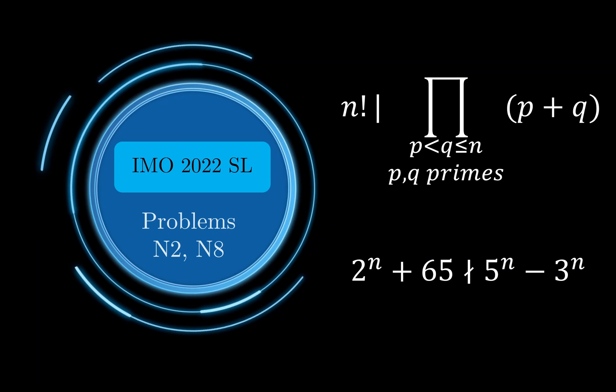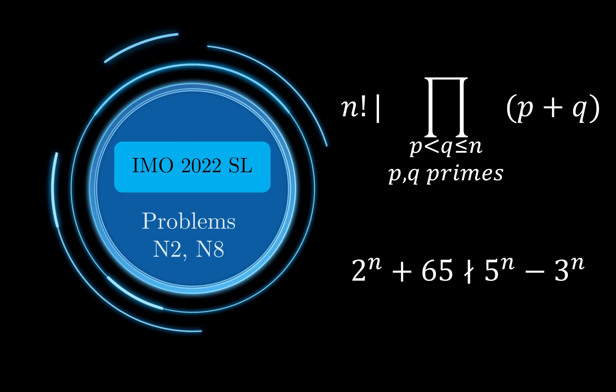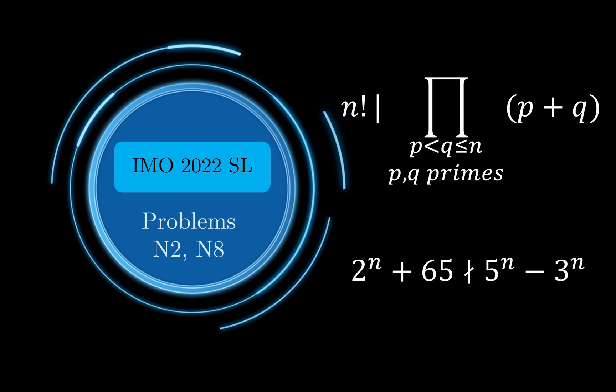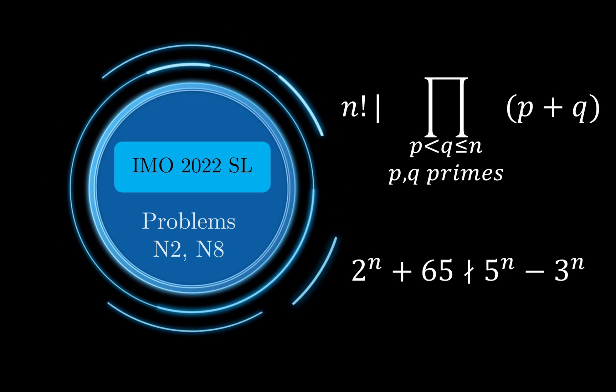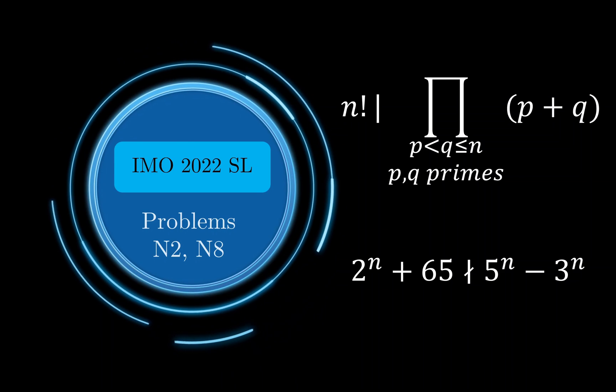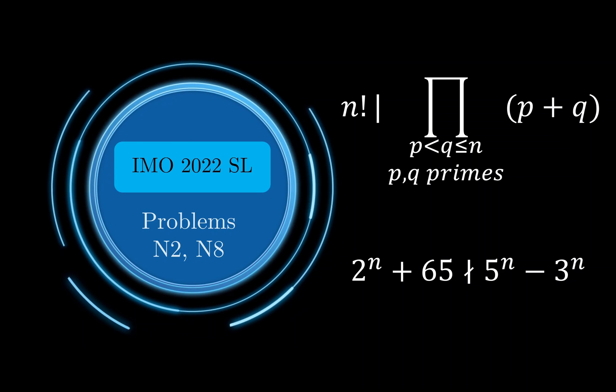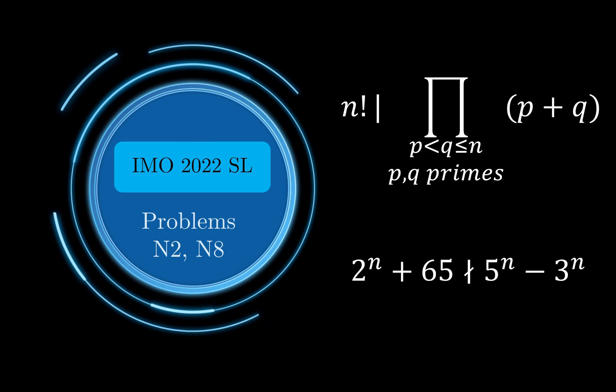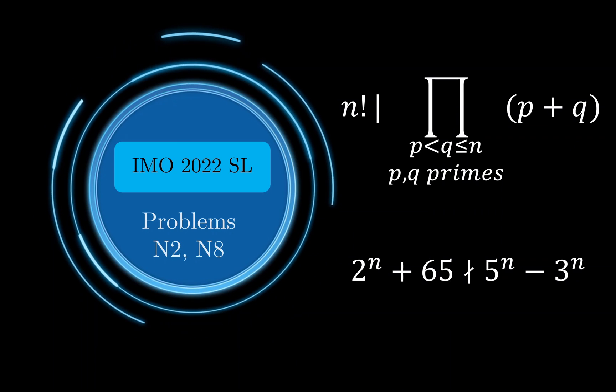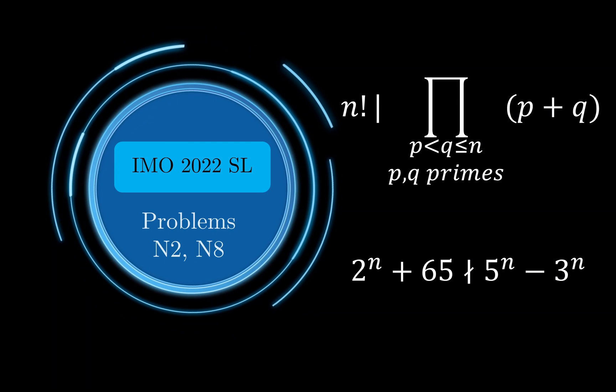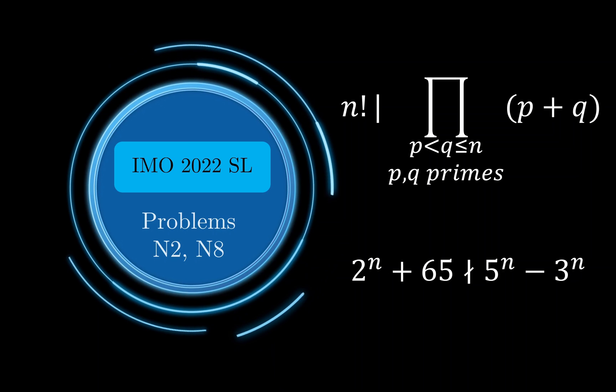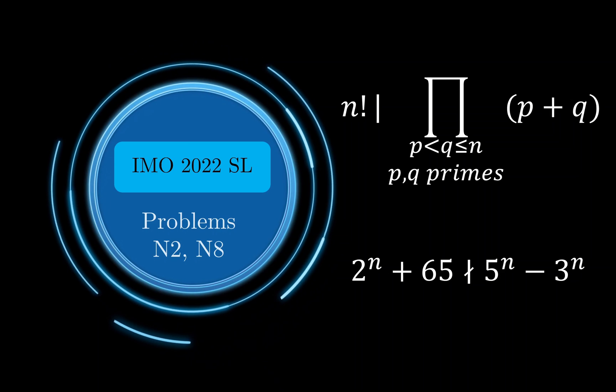Hello everyone, welcome back to Delikin Cuts. Today we will be taking a look at two number theory problems from the IMO 2022 shortlist, which was just released a couple of weeks ago. We will be taking a look at N2 and N8. Even though N8 may sound like a difficult problem, it can actually be dismantled with a two-line proof that uses some advanced number theory concepts, so you won't want to miss that. Without further ado, let us take a look at N2.